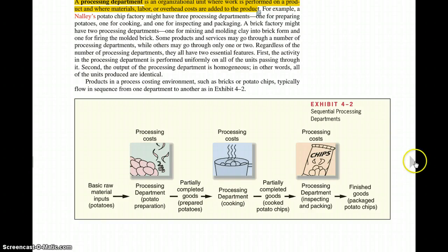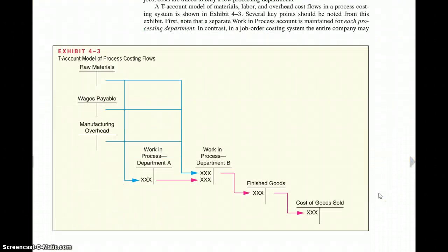If we take a look at the next table here, it's a T account, and they're trying to talk about that same type of flow. You can see that we have raw materials, wages payable, and manufacturing overhead. And we have two process departments. Instead of being cooking and inspecting, here they're just calling them A and B. Raw materials, wages payable, and manufacturing overhead can flow into both of these departments. But then you can see A flowing into B, and the expenses from B and A flowing to finished goods and cost of goods sold. So kind of like trickling, kind of looks like a little waterfall here. Taking the materials, the wages, and the overhead into the work in process to finished goods to cost of goods sold.